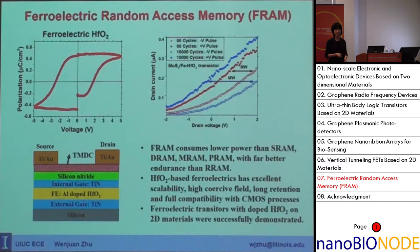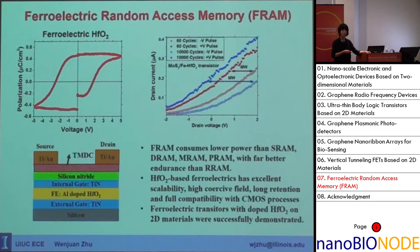Ferroelectric RAM has the advantage of low power compared to SRAM, DRAM, or MRAM (magnetic RAM) and PRAM (phase change memory). FRAM also has similar power consumption to RRAM (resistive memory), but with much better endurance, making ferroelectric memory a very promising non-volatile memory.